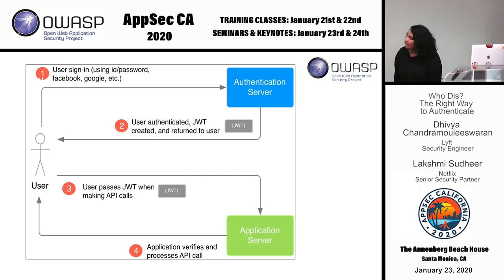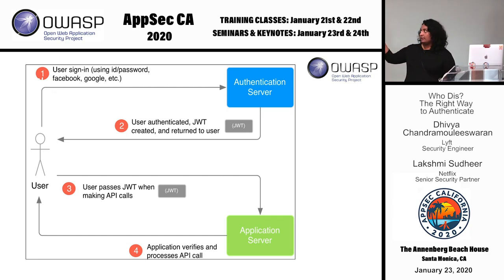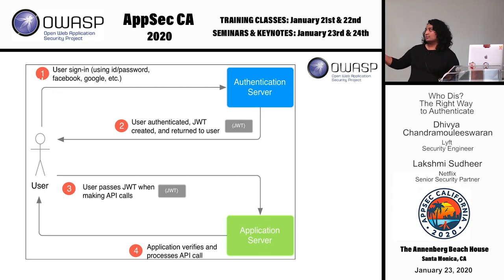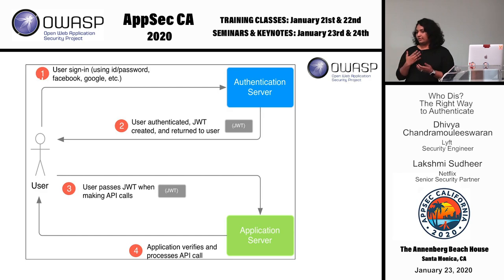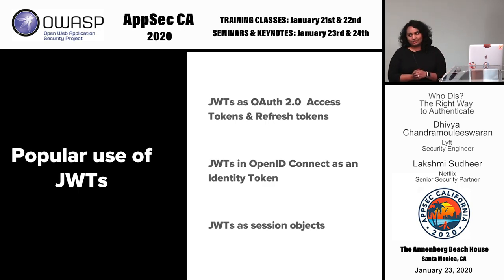Let's say I want to log into a third-party application using social auth like Google. I authenticate using a known secret such as my password, which goes to the authentication server. The server validates it and provides a JWT back to the user. I present it to the third-party application, which uses the public key of the auth server to validate and decode the signature. If it's the right signature, it knows the token hasn't been tampered with, and processes the request.